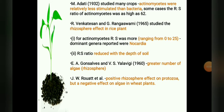In 1932, M. Adati studied many crops and found that though actinomycetes were relatively less dominant than bacteria, in some cases the RS ratio of actinomycetes was as high as 62.